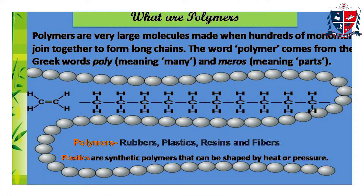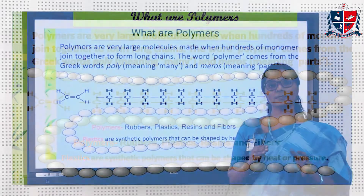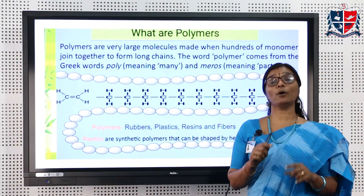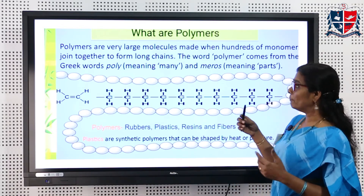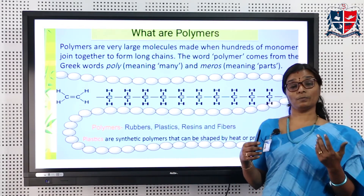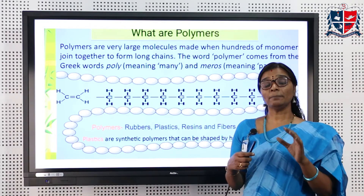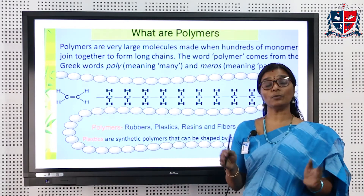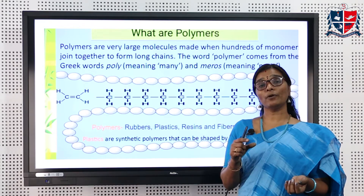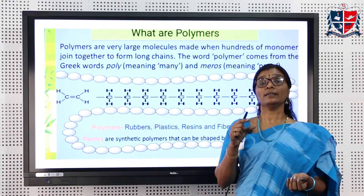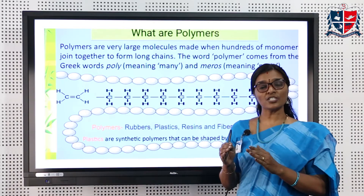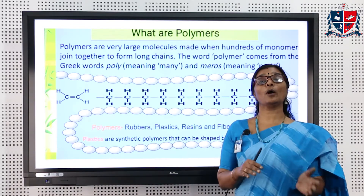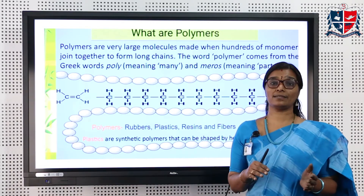What are polymers? The word polymer is a Greek word made up of two words: poly and mer. Poly means many and mer means meros. Meros means units or parts. That means polymers are macromolecules which are made up of many units. These small units are called monomers. The conversion of monomers to polymers is called polymerization.